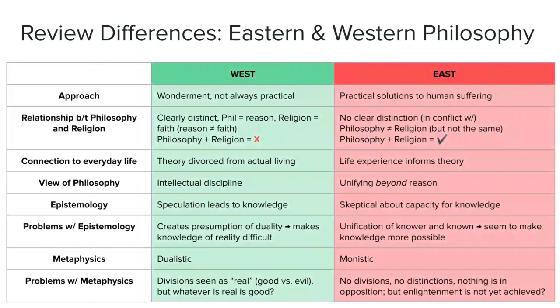The other primary distinction is the way they approach metaphysics. We're going to see a very dualistic approach in the west, where all concepts are seen as having two opposing forces — good and evil, heaven and hell. Whereas in the east, we'll see more of a monistic approach to the nature of reality, where all things are part of one ultimate reality, or the concepts themselves, once truly understood, are in fact indistinguishable from each other.